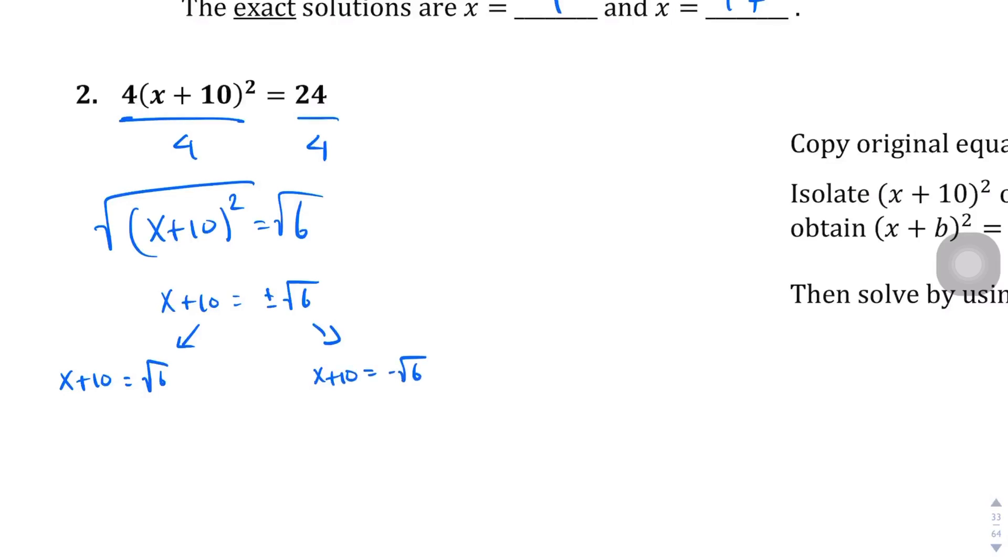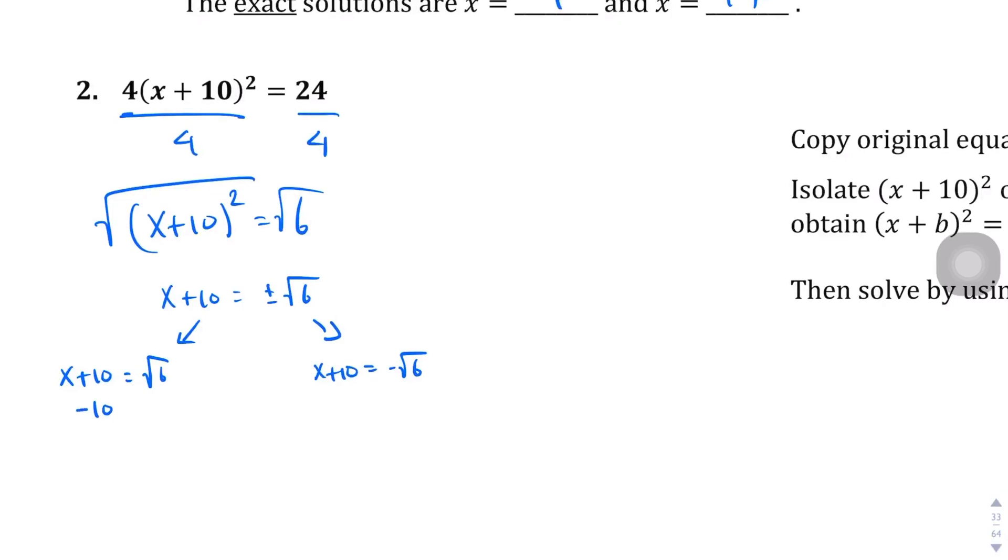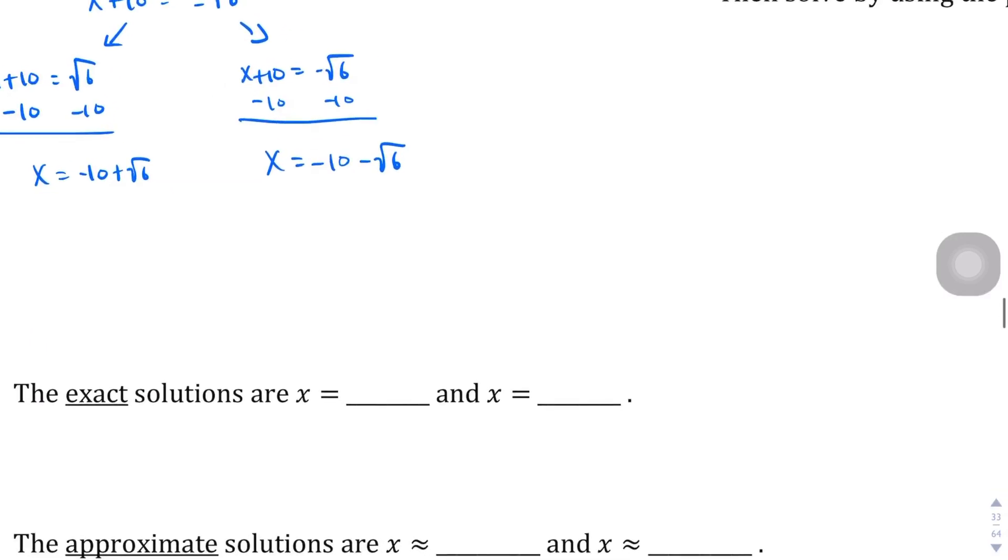And then if we deal with this, subtract 10 from both sides, we get x equals negative 10 plus square root of 6. And on this side, we get x equals negative 10 minus square root of 6. So you could punch it in the calculator and get an exact number, but we're going to leave it like that. We're going to leave it as negative 10 plus square root of 6 and negative 10 minus square root of 6.